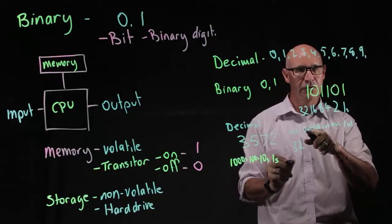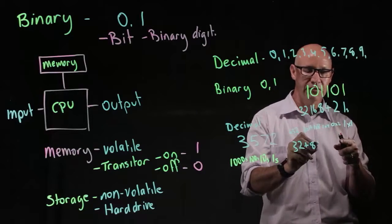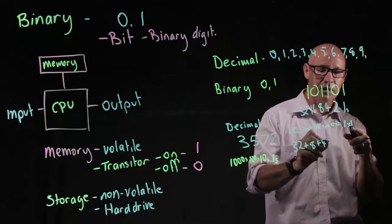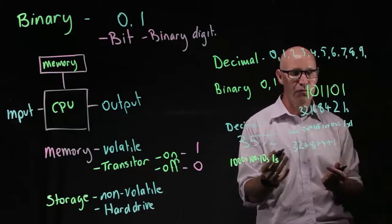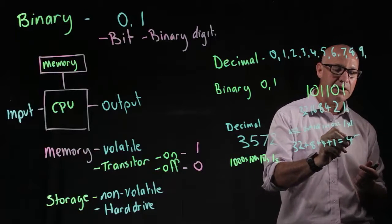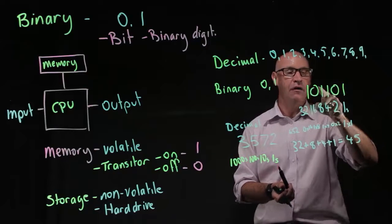So that means we've got 32. Forget about the zero times 16. Plus eight. Plus four. Forget about the zero times two. And we've got one times one. So let's add that up. 32 plus eight is 40, 44, 45. So that means that this binary number here means 45.